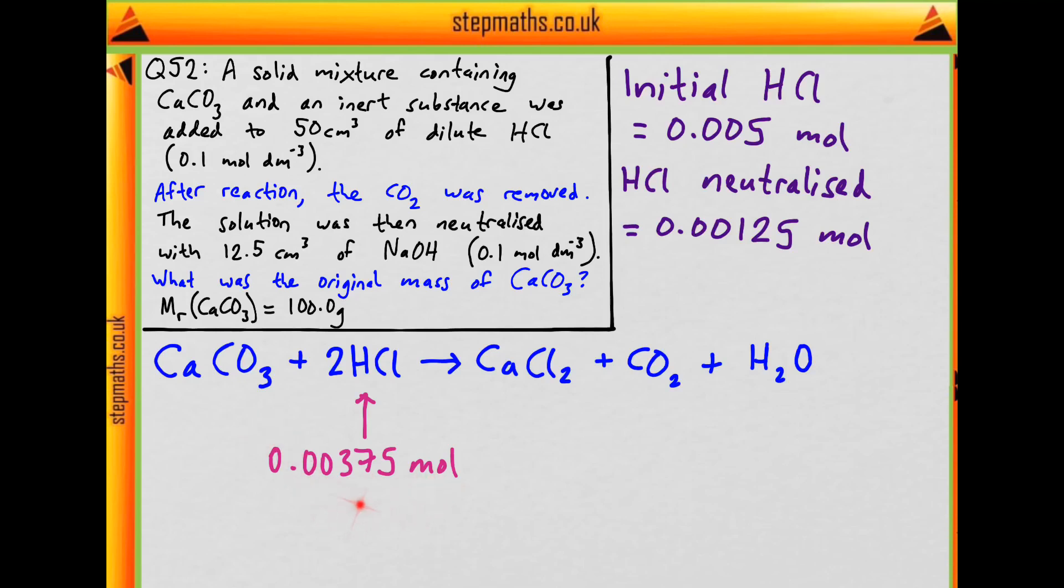And so how much calcium carbonate reacted with this? Remember that the number 2 means that we use twice as much hydrochloric acid than we use calcium carbonate, so we need to halve this. What's half of 0.00375? That's 0.001875.